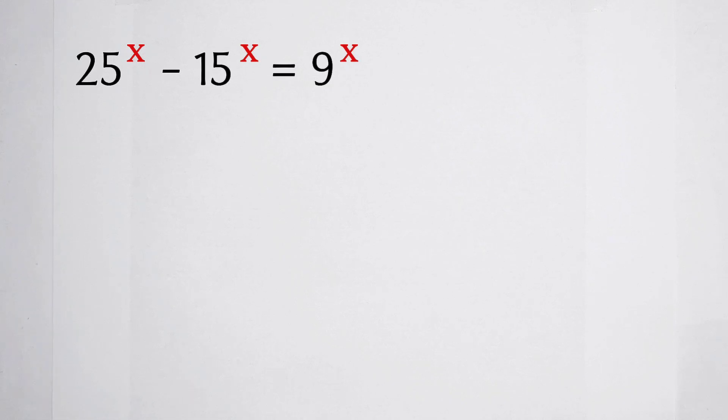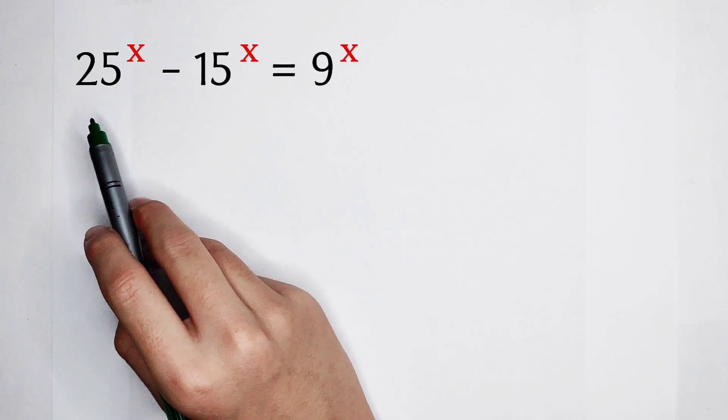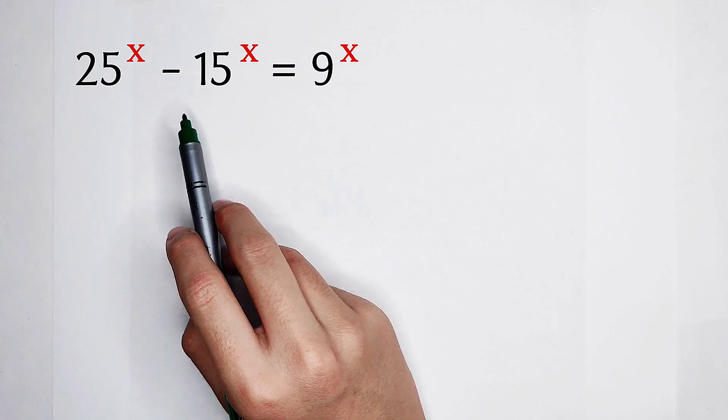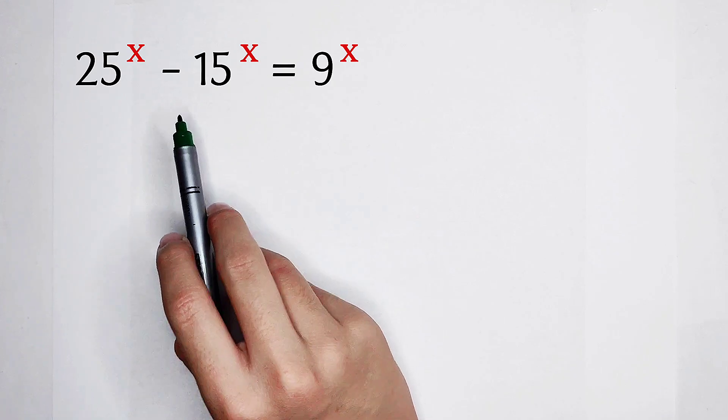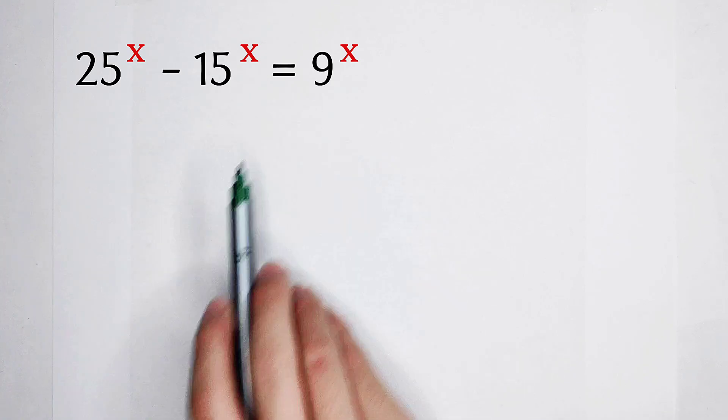Welcome back to Mathwino. Solve this equation: 25 to the power of x, minus 15 to the power of x, is equal to 9 to the power of x.